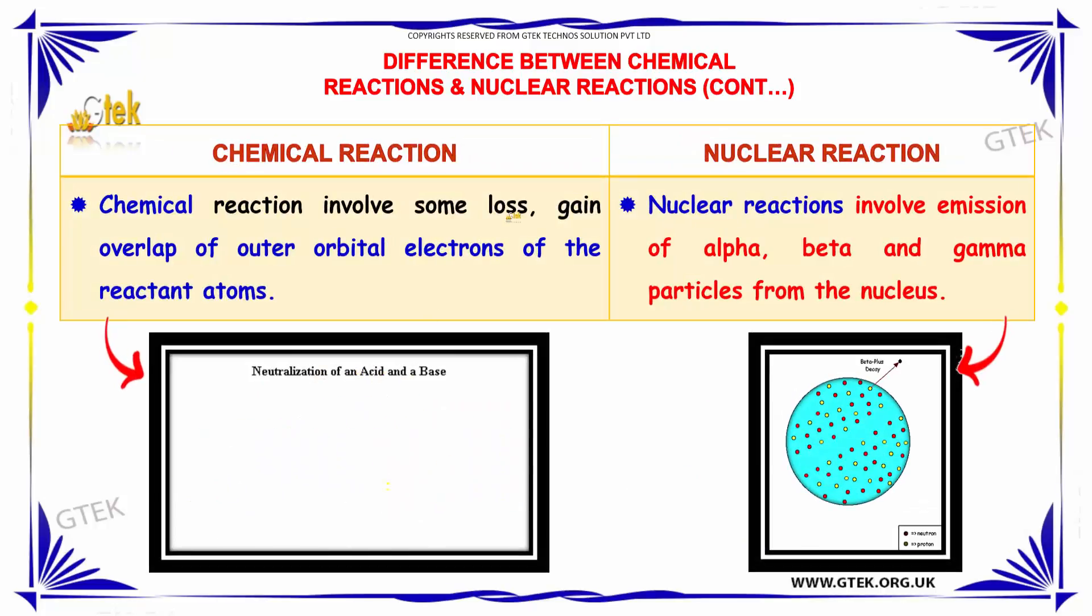Here is the difference between chemical reaction and nuclear reaction. Chemical reaction involves some loss, gain, or overlap of outer orbital electrons of the reactant atoms. Nuclear reactions involve emission of alpha, beta, and gamma particles from the nucleus.